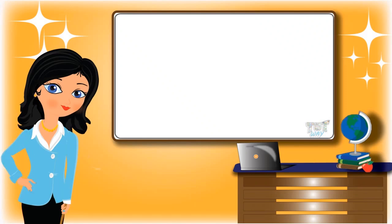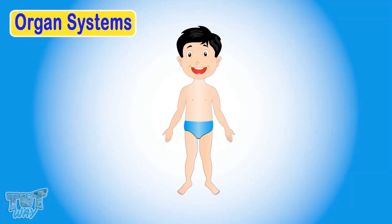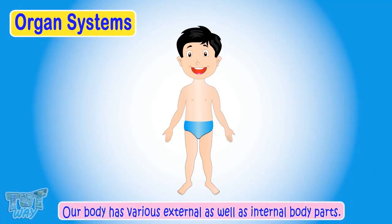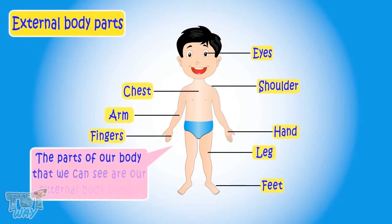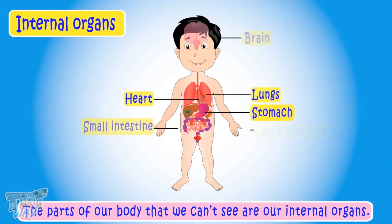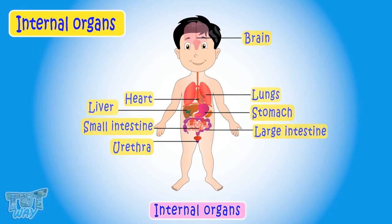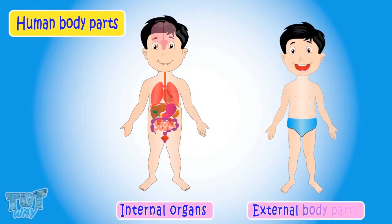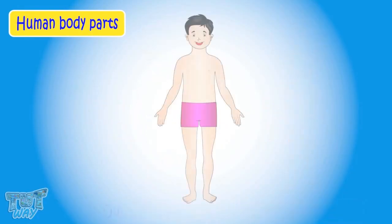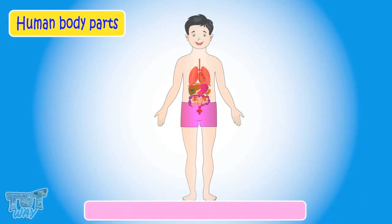Hi kids, today we will learn about organ systems. Our body has various external as well as internal body parts. The parts of our body that we see are our external body parts, and the body parts that we can't see, like our lungs, heart, stomach, and brain, are our internal body parts, called internal organs. Each internal as well as external body part has its own function. Our body works like a machine where each organ performs a specific function, and organs of our body do not work alone.